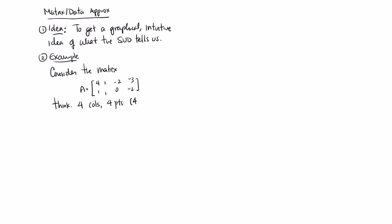So really we're thinking four comma one, one comma one, negative two comma zero, and negative three comma negative two. So think of those points.